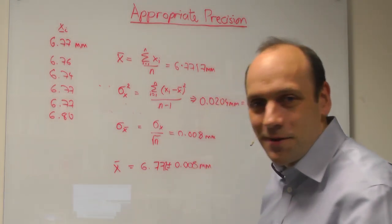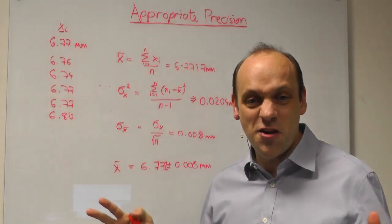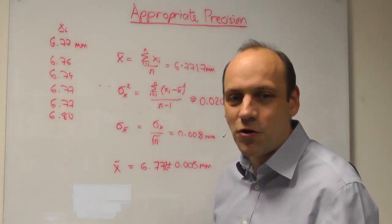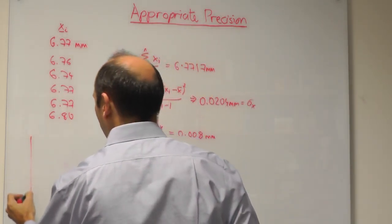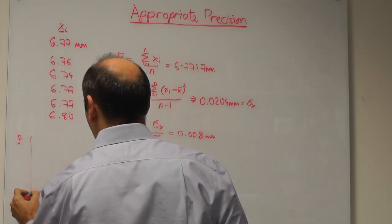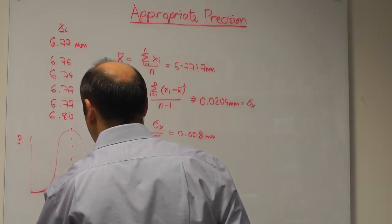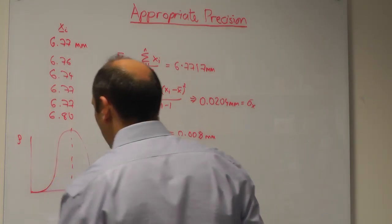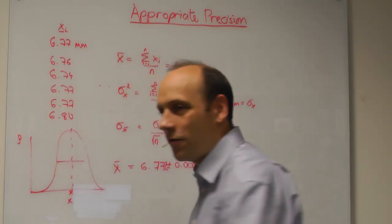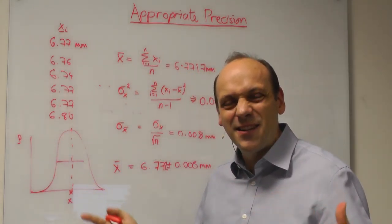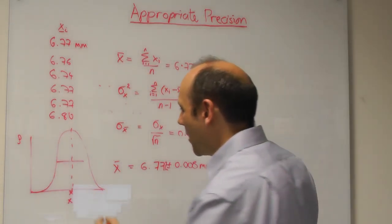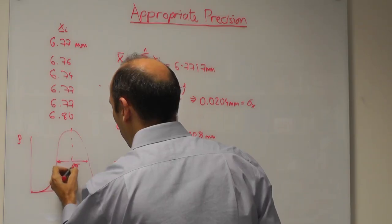Now, if I did enough measurements, we would assume that they would follow a normal distribution. A normal distribution looks a bit like this. If I take the frequency of measurement against the measurement value, they'd have a central value here at X-bar and a width. This distribution falls off at a rate which is an e to the minus X squared type thing, and the amount of quickness with which it falls away is a measure of that uncertainty.